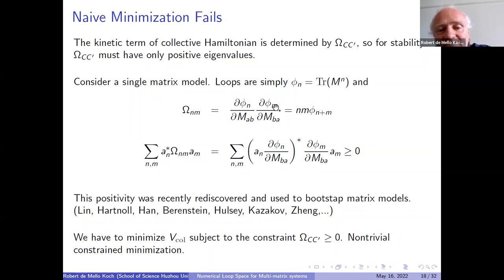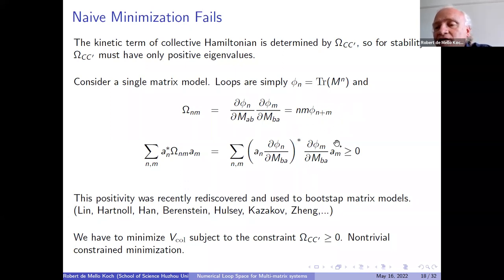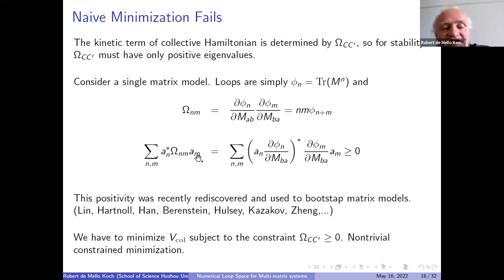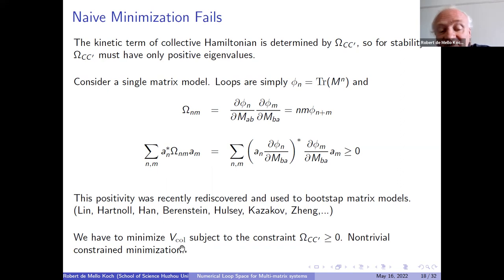Omega is automatically positive: if you take the loop joining matrix and contract it with any vector a_m a_n*, this is manifestly positive. So the values of loops that you can get by plugging in matrices will always have omega non-negative — eigenvalues can be positive or zero. We really have to minimize the collective potential subject to the constraint that the eigenvalues of omega are not negative.